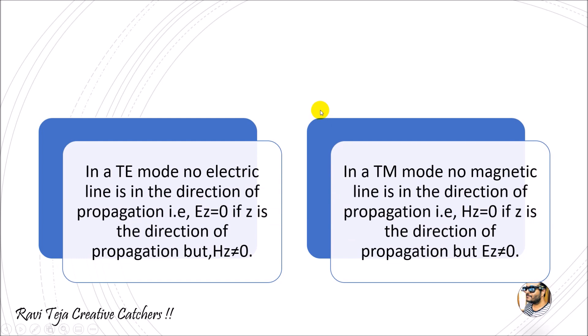In a TM mode, no magnetic line is in the direction of propagation because it is transverse or perpendicular to the direction of propagation. So in a TM mode, Hz is represented as 0. As the magnetic field is equal to 0 and it is perpendicular to the electric field, the electric field along the z direction will not be 0, because the electric field travels along the direction of the propagation or along the z axis in a waveguide. So in summary: in TE mode, Ez is always 0 and Hz is not equal to 0; in TM mode, Hz is equal to 0 and Ez is not equal to 0.